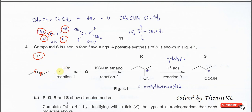After that, P reacts with HBr. This is an electrophilic addition reaction. The HBr adds across the alkene to form a haloalkane. Butene reacts with HBr to form this haloalkane product.